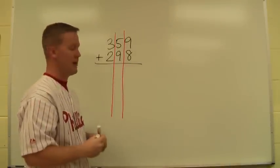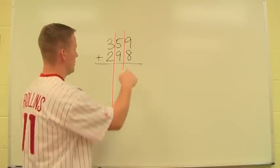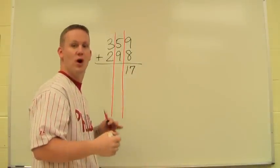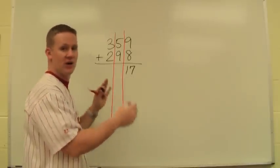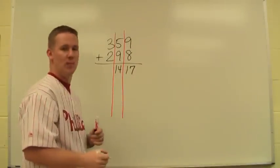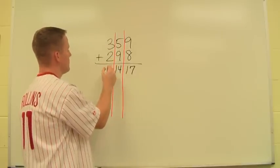So I start with 9 plus 8, which is 17. Now traditionally we would put the 7 here and carry the 1. However in this case, since I have columns, it's okay to have a number in the tens here. We're going to come back to that later. 5 plus 9 is 14, again I keep the whole number in that column, and finally 3 plus 2 is 5.